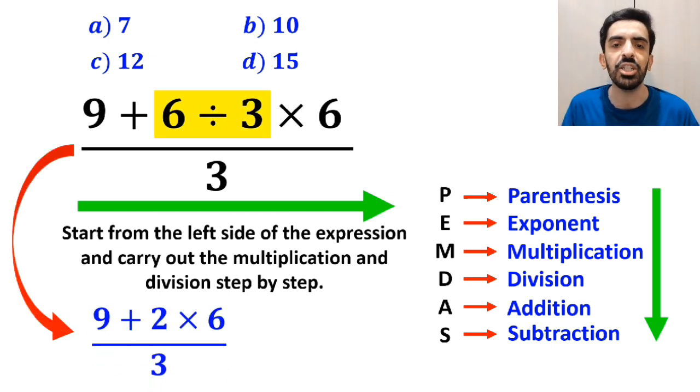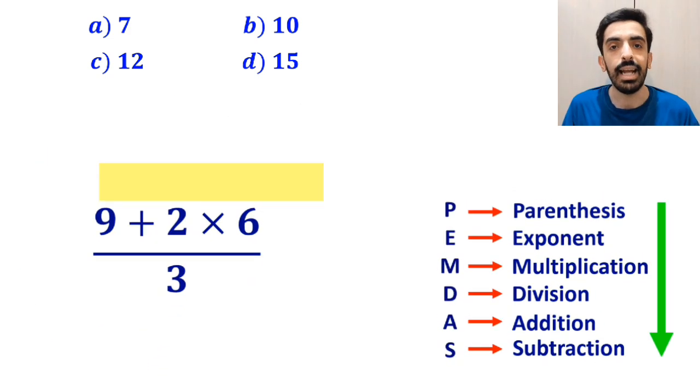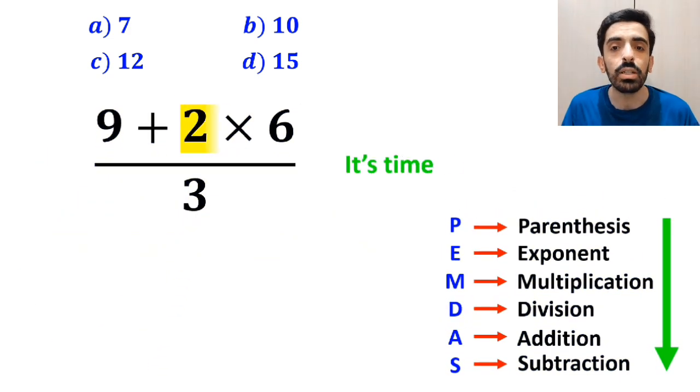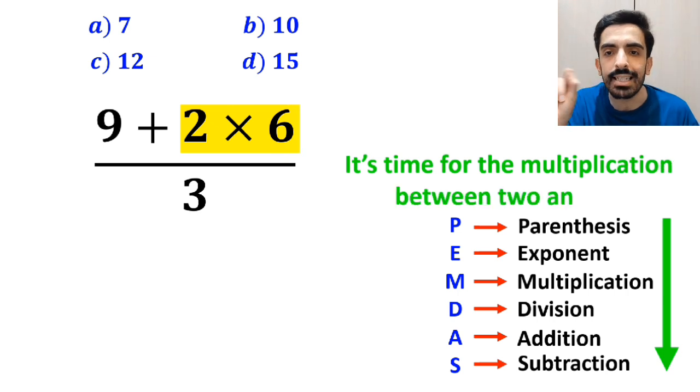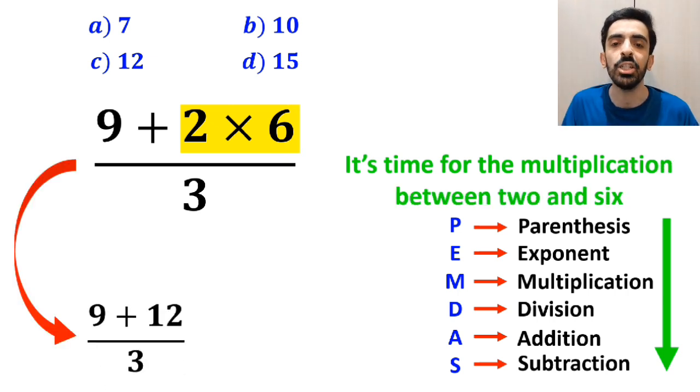And we can rewrite the whole expression as 9 plus 2 times 6 over 3. In the next step, it's time for the multiplication between 2 and 6, which simplifies the expression to 9 plus 12 over 3.